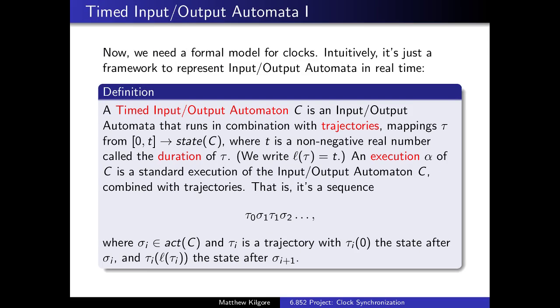Now, this previous result didn't define a formal model for clocks, so we'll do that now. The model is called a Timed Input/Output Automata, or TIOA, and this is basically just a regular input/output automata that runs in combination with trajectories, which map an interval into the set of states, where this interval time is called the duration. An execution is just a combination of actions and trajectories.